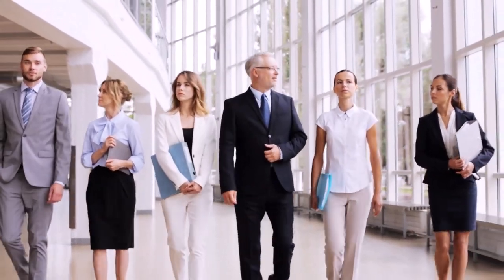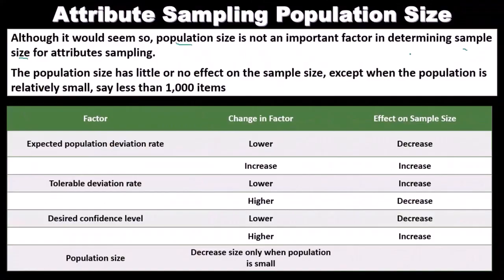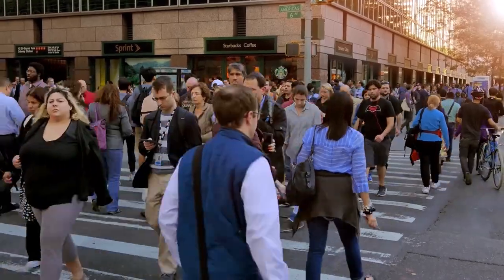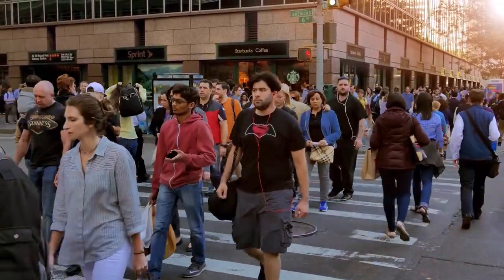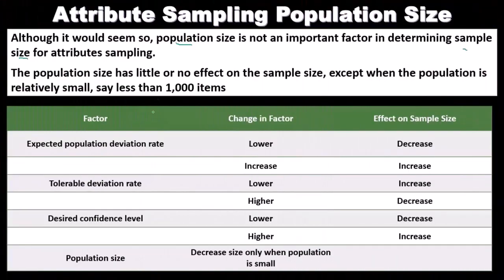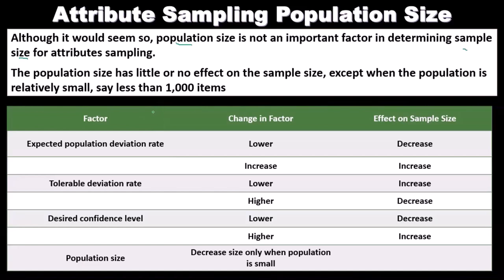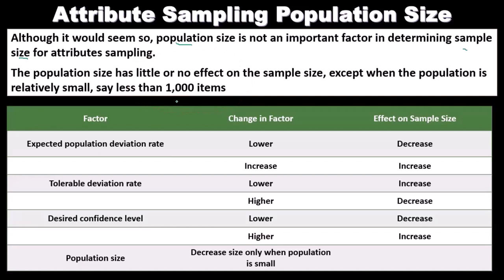However, for small populations, that may be the case. The population size has little or no effect on sample size except when the population is relatively small — say, less than a thousand. In that case, you might adjust your sample size to coincide with a population of 500, 600, or up to a thousand.